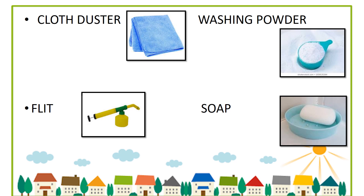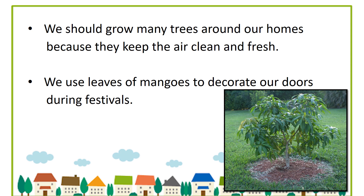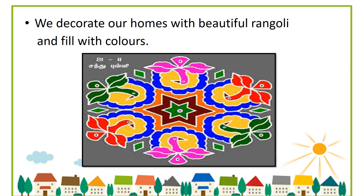Washing is used to clean the vessels, hands, clothes, etc. Flit is a liquid which was used in a sprayer to kill mosquitoes when all-out and mosquito coils were not available. We must grow many trees around our house — they give us shade, fresh air and oxygen, and reduce noise pollution. When we celebrate festivals, we use flowers and mango leaves to decorate our home. Mom decorates our home with beautiful rangoli and fills it with colors to look beautiful. Here you can see a beautiful rangoli with colors — can you try one?